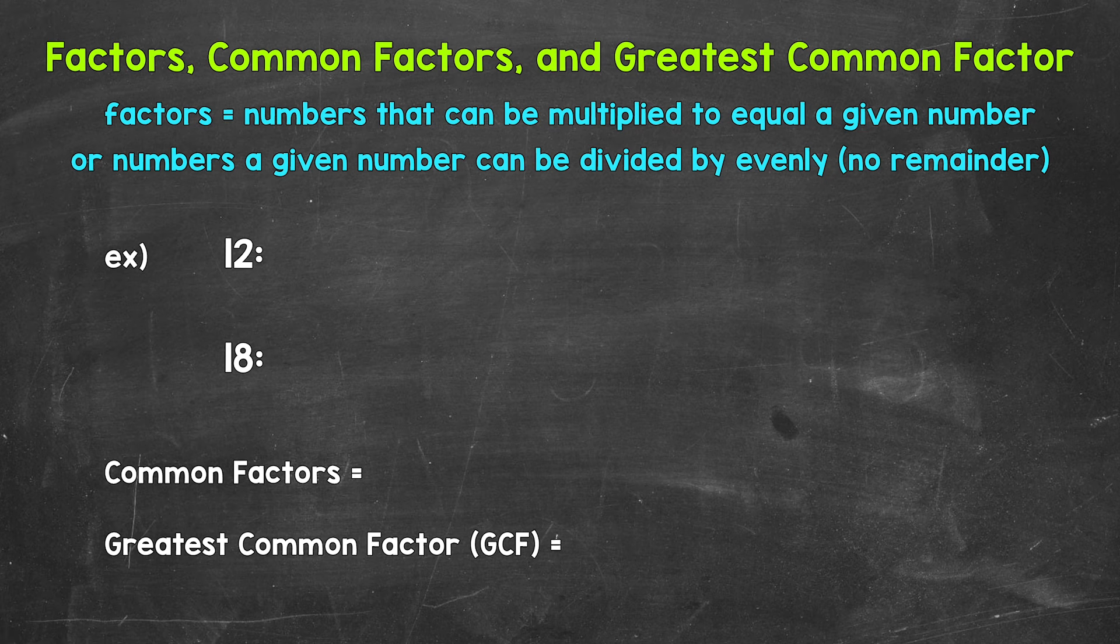Let's jump into our example where we have 12 and 18. We're going to list the factors of 12 and 18, then find common factors, and then lastly find the greatest common factor, which is also referred to as the GCF.